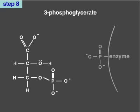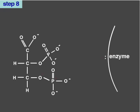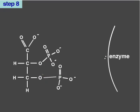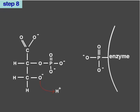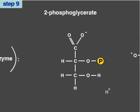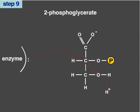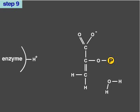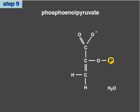In the 8th step, 3-phosphoglycerate, which has a relatively low free energy of hydrolysis, is transformed by the enzyme phosphoglycerate mutase into 2-phosphoglycerate. In the 9th step, the enzyme enolase removes a water molecule from 2-phosphoglycerate, creating phosphoenolpyruvate. The loss of water redistributes energy within the molecule, creating a phosphate group with an extremely high free energy of hydrolysis.